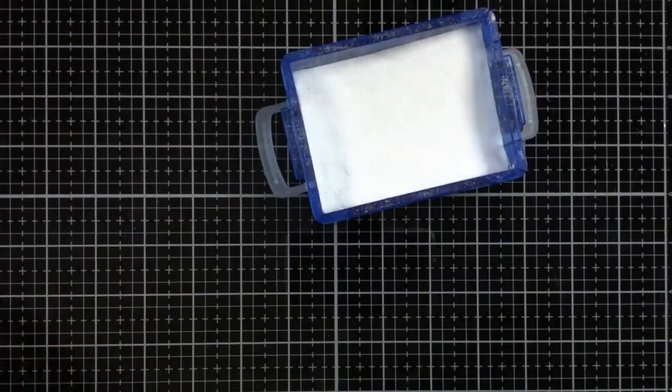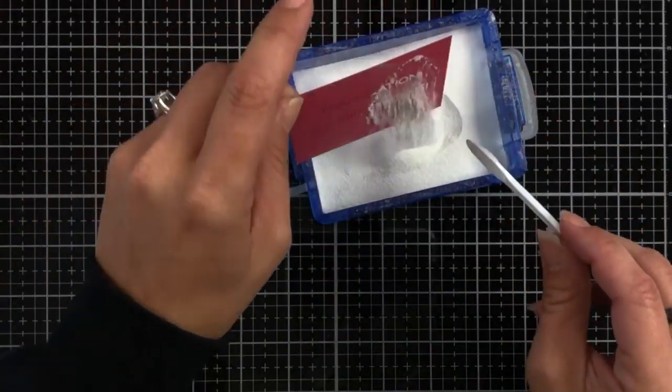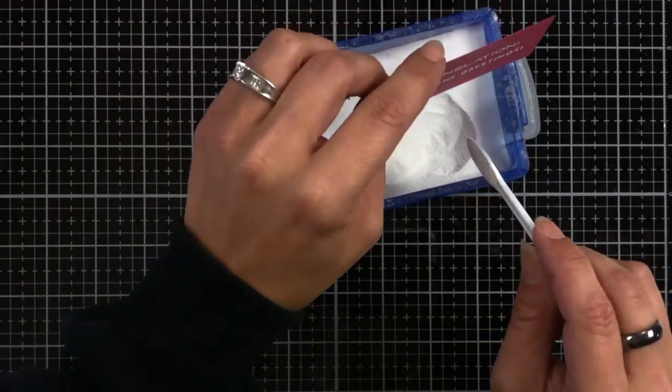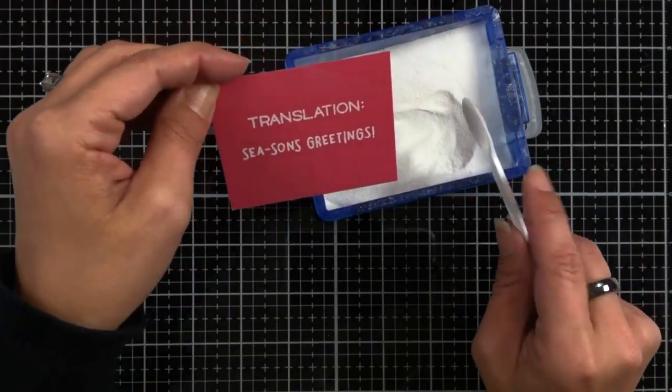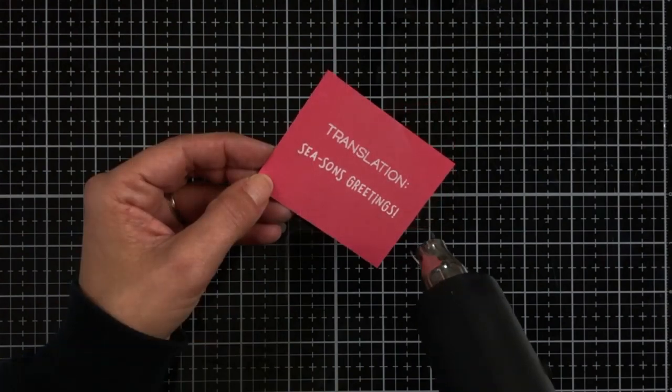And then I can sprinkle on the white embossing powder and heat set that with my heat tool. So we have bloop on the front of the card and translation is season's greetings.